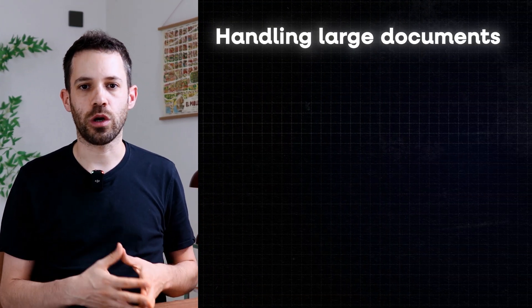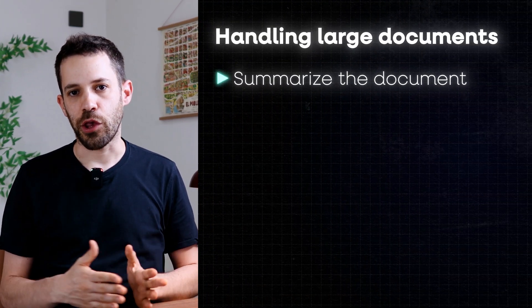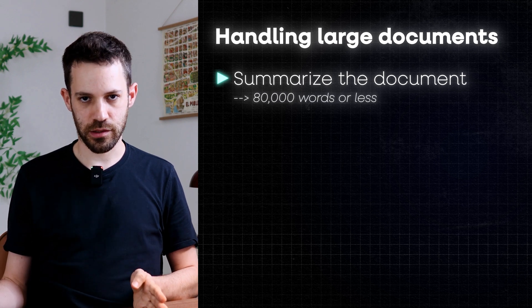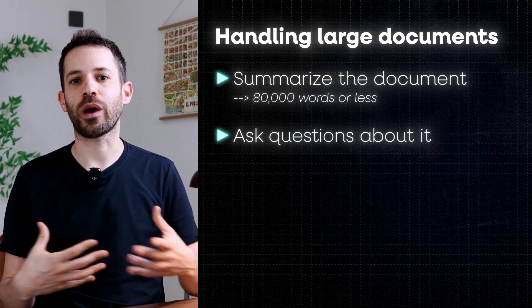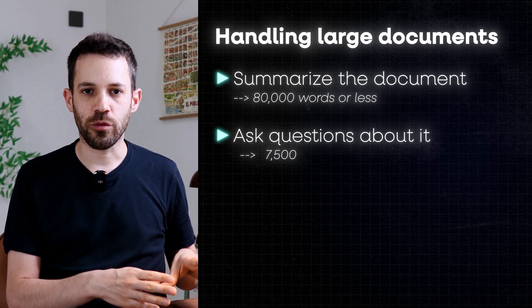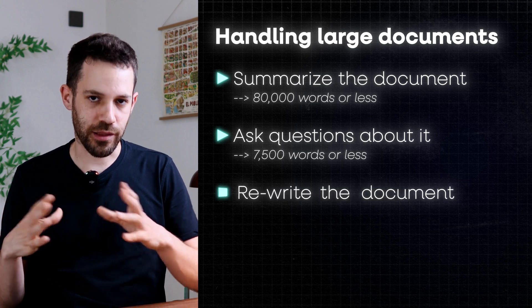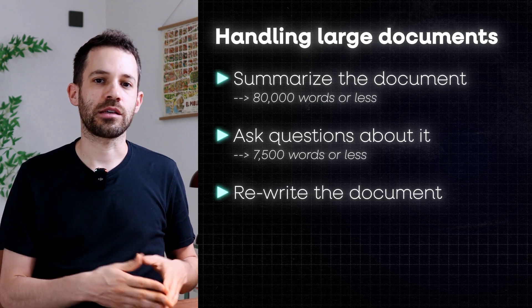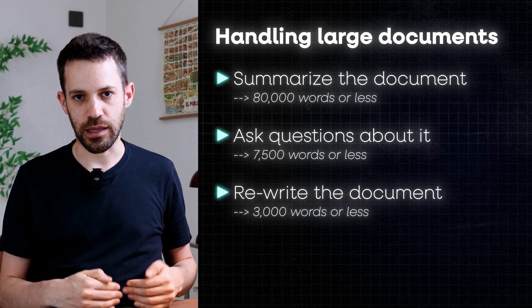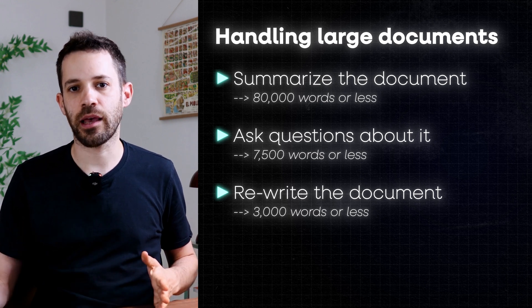For source, refer to one or two documents at most. It's also important to understand how much Copilot can handle at once. For summarizing large documents, keep them to 80,000 words or less. If you're asking Copilot questions about a document, keep it at 7,500 words or less. And if you want Copilot to rewrite a document, keep it to 3,000 words or less. That's according to Microsoft the optimal length for each of these tasks. If your source file is longer, don't worry — I have a tip on how to deal with such cases later on.